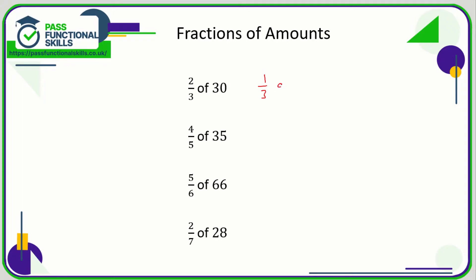Now 1/3 of 30, that is the same as 30 divided by 3. So 1/3 of 30 equals 10. So if 1/3 of 30 is 10, what is 2/3 of 30? Well 2/3 is double 1/3, so double 10 is 20.